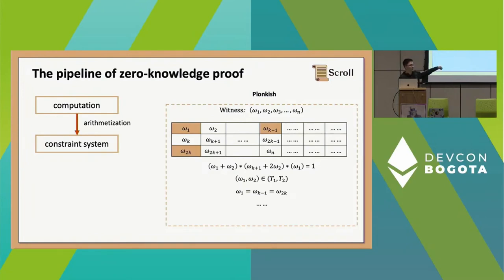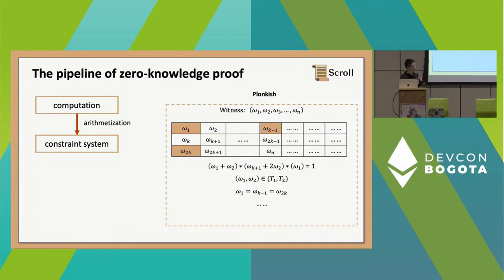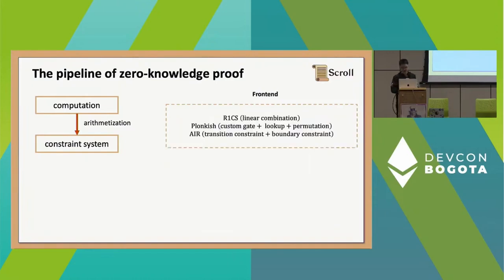The third thing you can define in Plonkish is permutation — you define that some cells are equal. This is useful because after defining multiple custom gates you need to connect them together. For example, you define that the first gate's output equals the second gate's input. So the three constraints in Plonkish are: custom gate, lookup, and permutation.